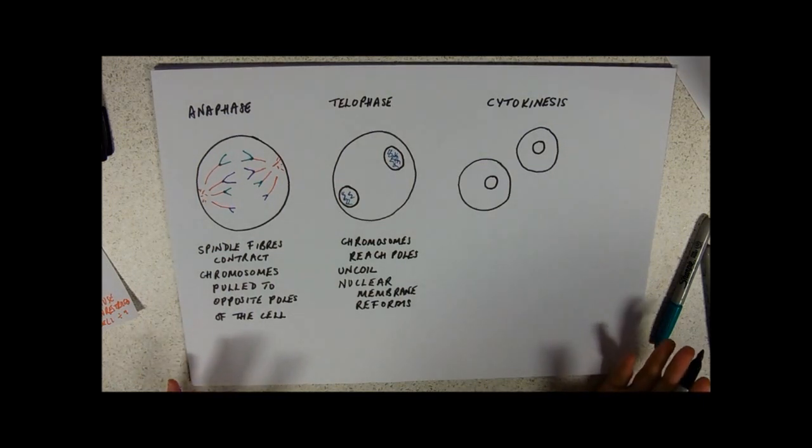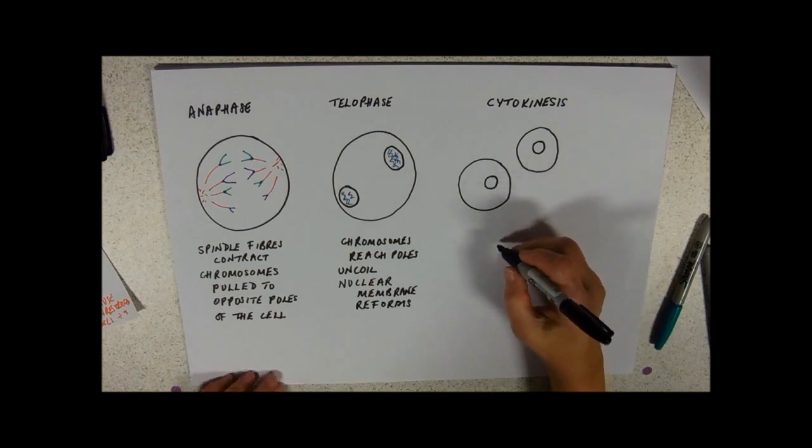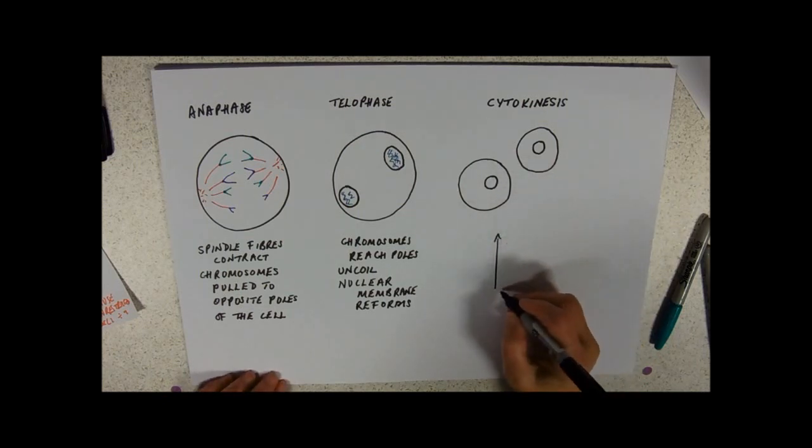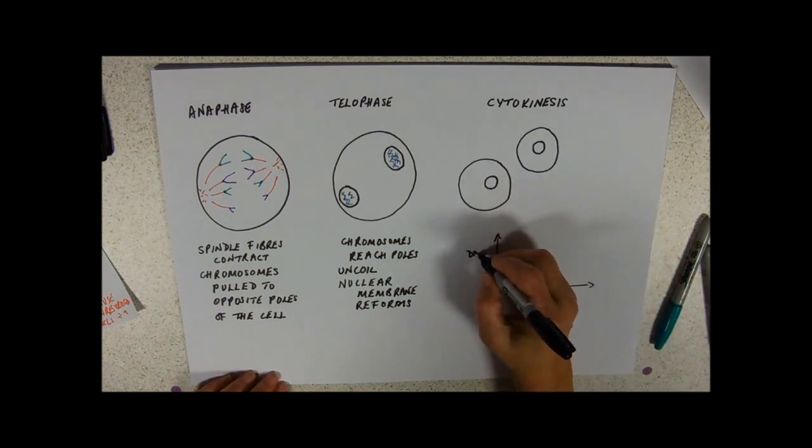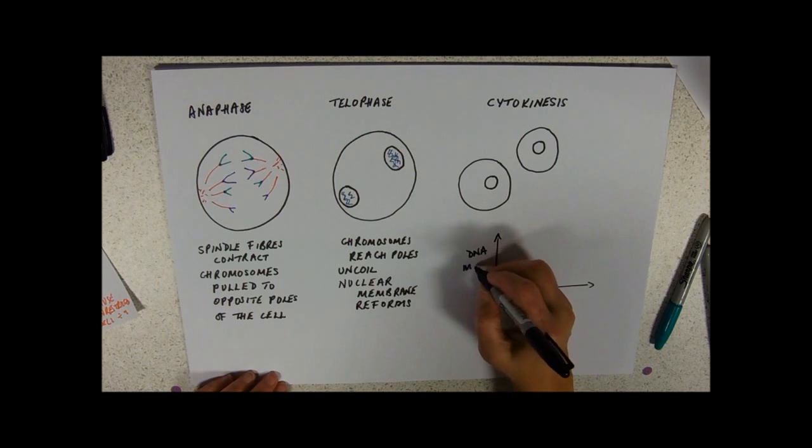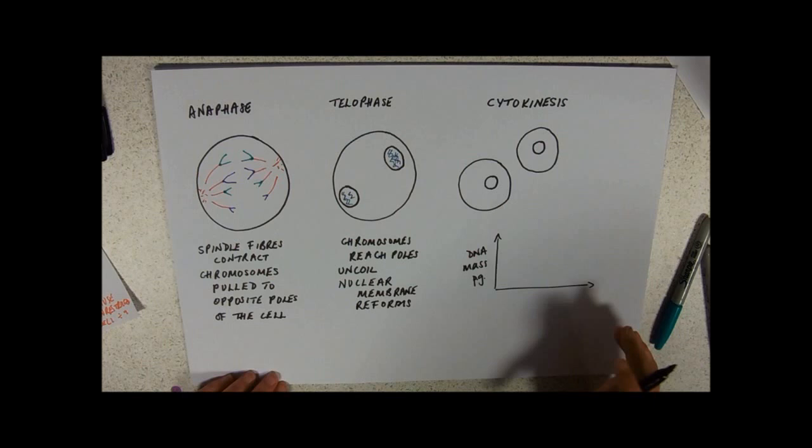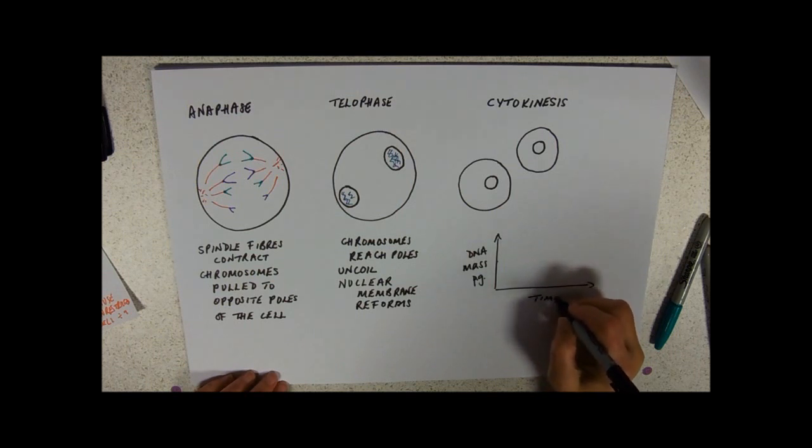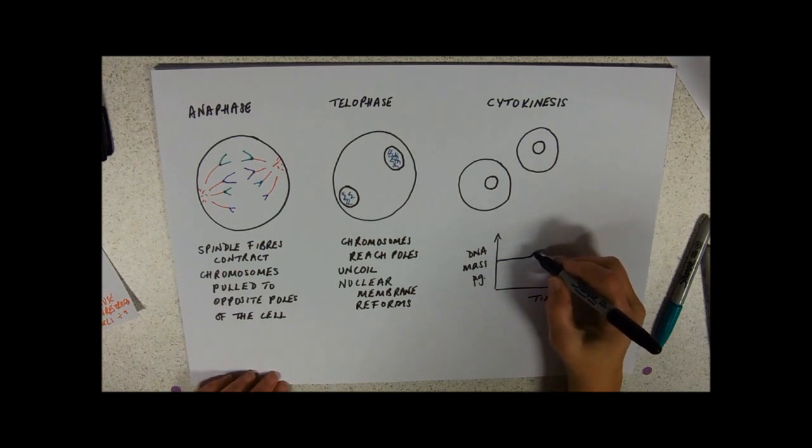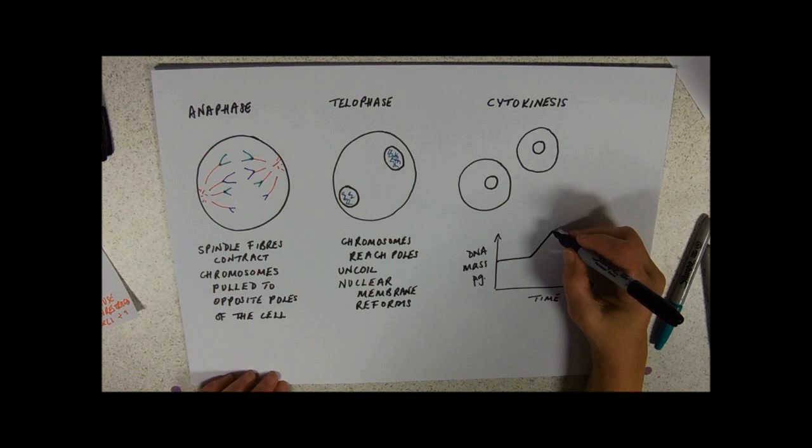So what else might you see in exams? You might see a graph. Hesitate to use the word amount. Let's call it a mass. This will probably be in picograms. Quite small. So effectively, your graph will be against time. It's showing the process of mitosis. It goes along. Doubles in interphase. That's your DNA replication happening.